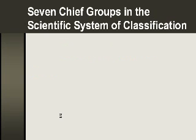There was a fellow by the name of Carolus Linnaeus — I think it was Carl von Linné — and he changed his name to Carolus Linnaeus because he set up this classification system in Latin and took a Latin name. He had a scientific system that's still used today. There are seven chief groups to classify living systems.